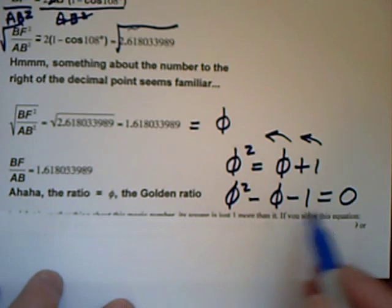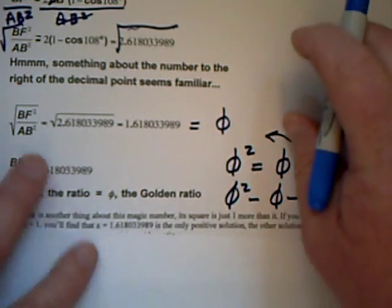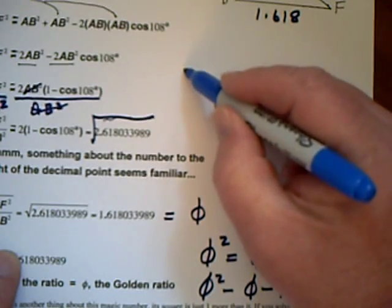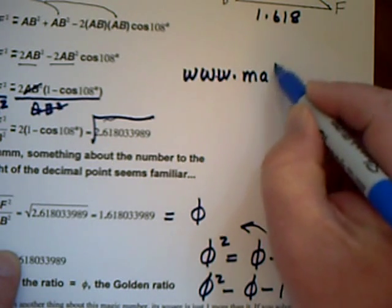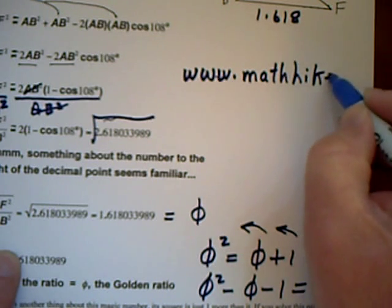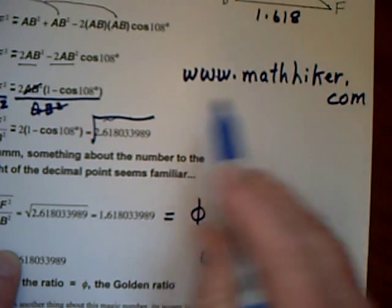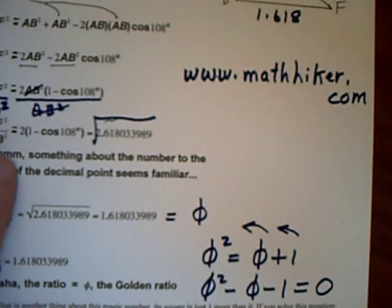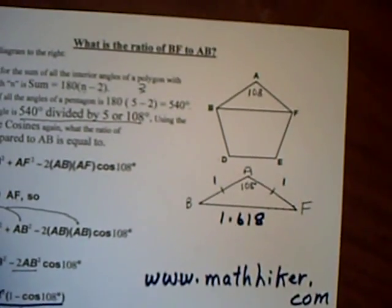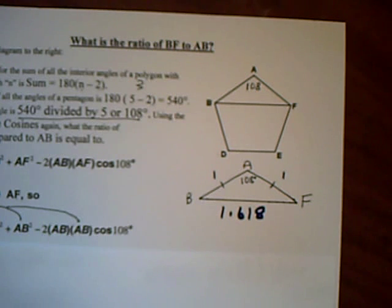So in fact, the golden ratio is the only number that has that sort of property. So I urge you to go to www.mathhiker.com and look at the series I have on the golden ratio. Because it's all wrapped up with the pentagon, which is why maybe the Pythagoreans use the pentagon as part of their symbols.